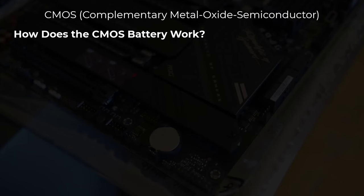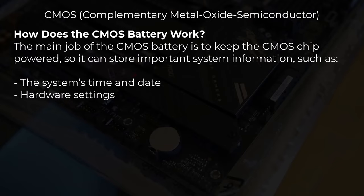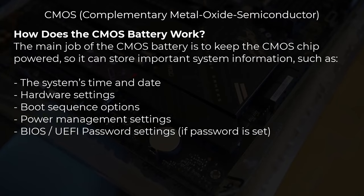How does the CMOS battery work? The main job of the CMOS battery is to keep the CMOS chip powered so it can store important system information such as the system time and date, hardware settings, boot sequence options, power management settings, and BIOS/UEFI password settings if a password is set. When you change the BIOS settings, they are saved in the CMOS chip. If the CMOS battery dies, these settings reset to factory defaults every time the computer is powered off.